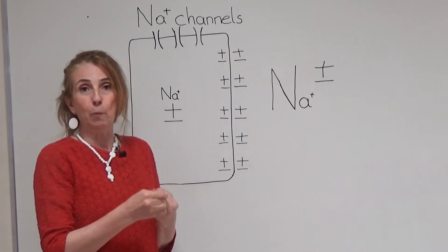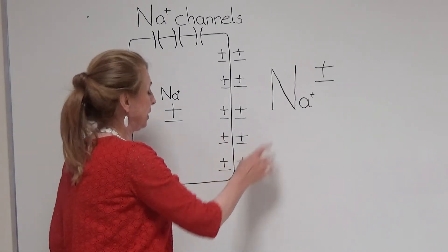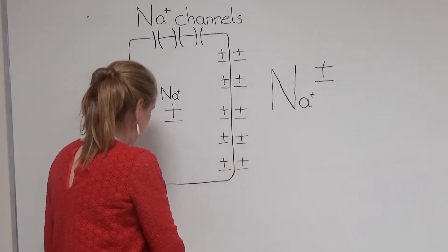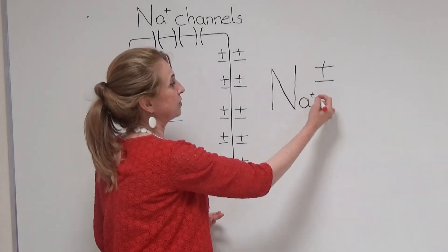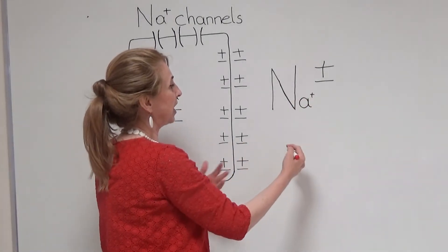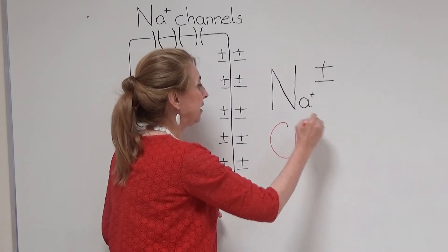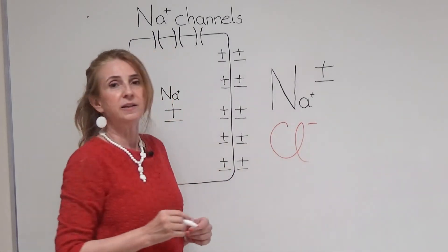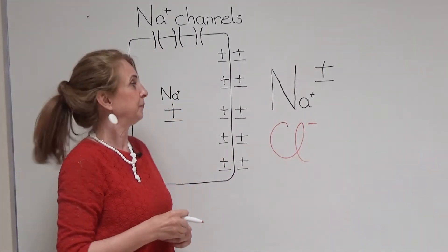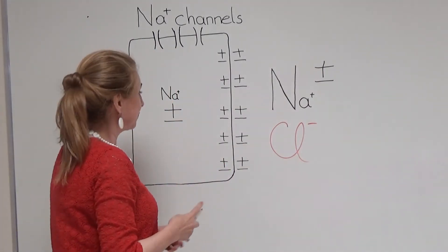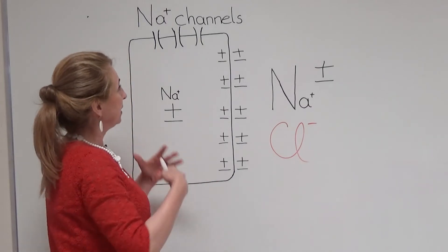What is an accompanying ion? In our example, sodium is a positively charged ion — a cation — and the accompanying ion is chloride, an anion. So, let us start our design.